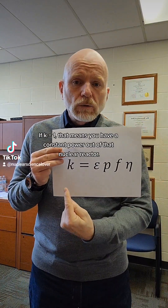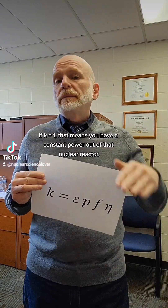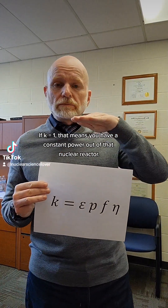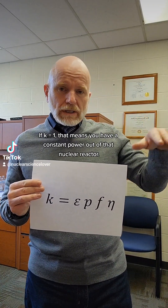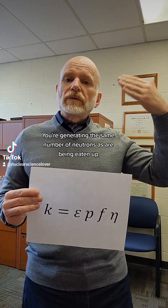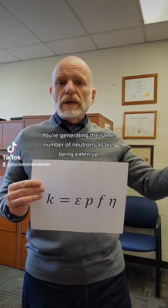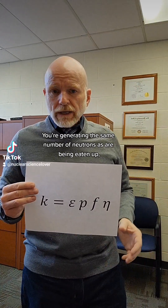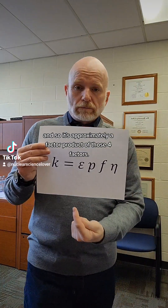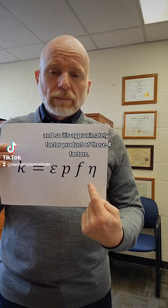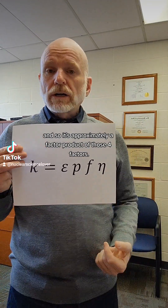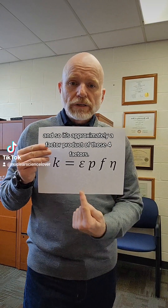If K equals one, that means you have a constant power output from that nuclear reactor — you're generating the same number of neutrons as are being used up. And so K is approximately a product of those four factors.